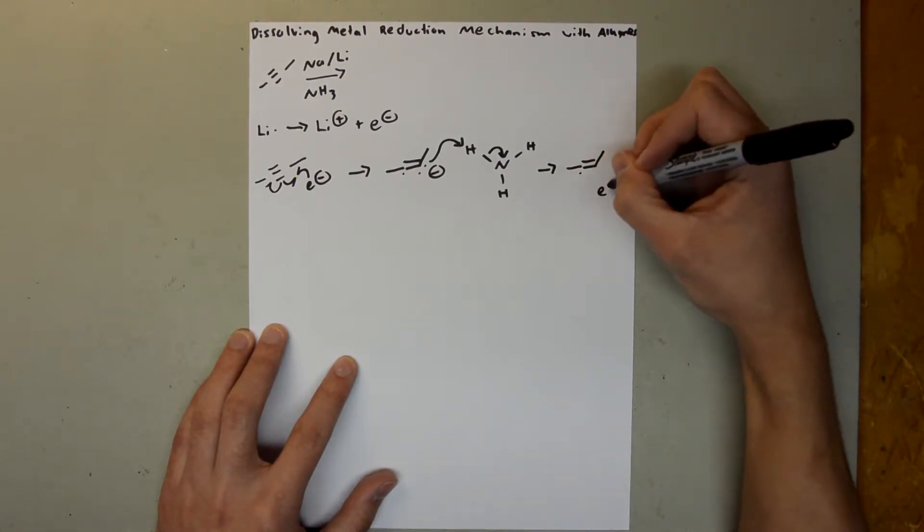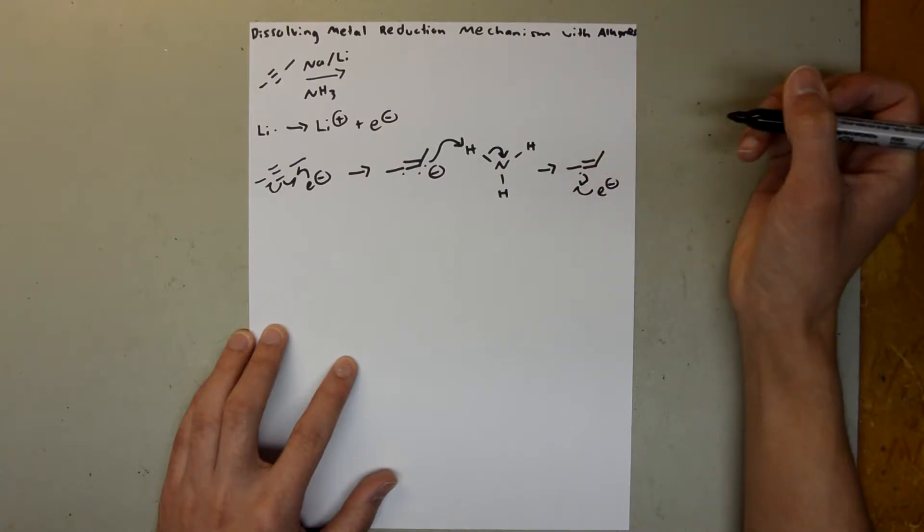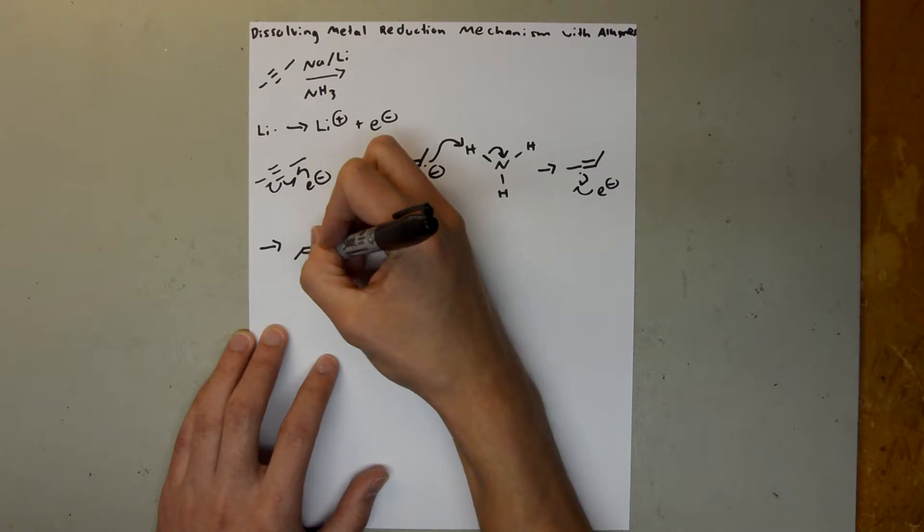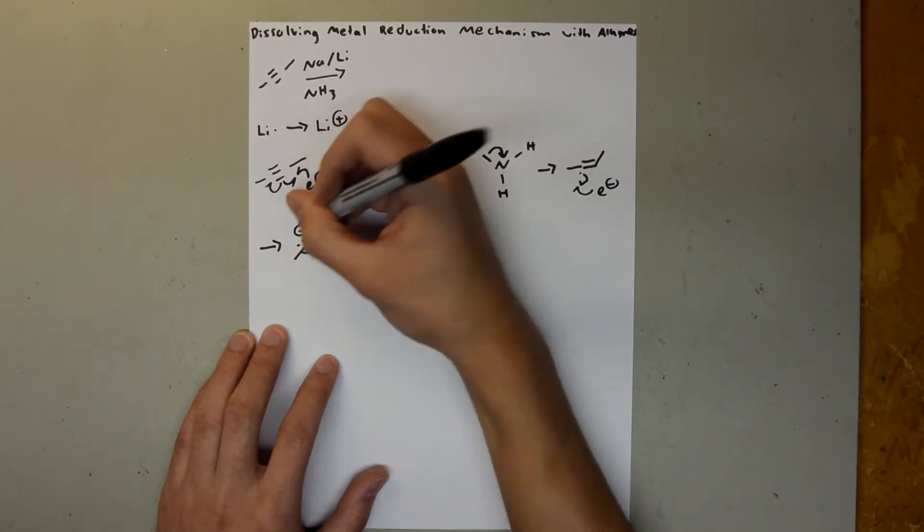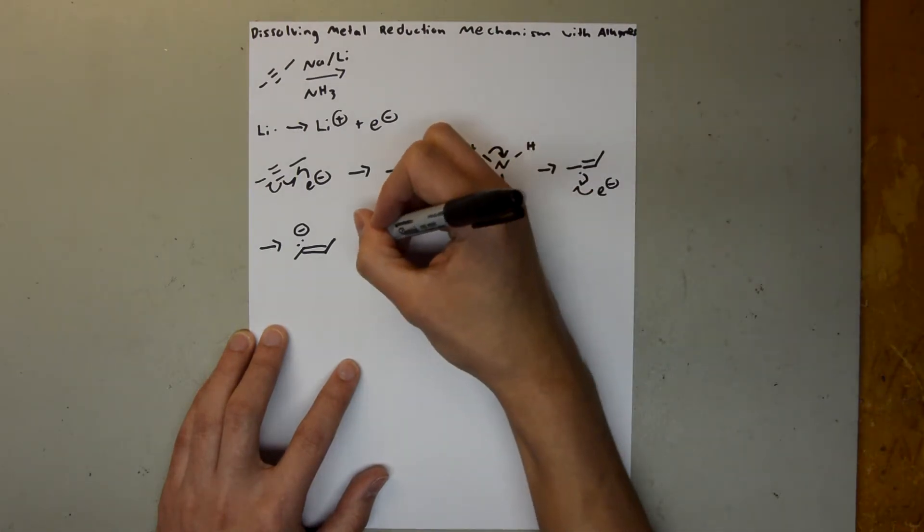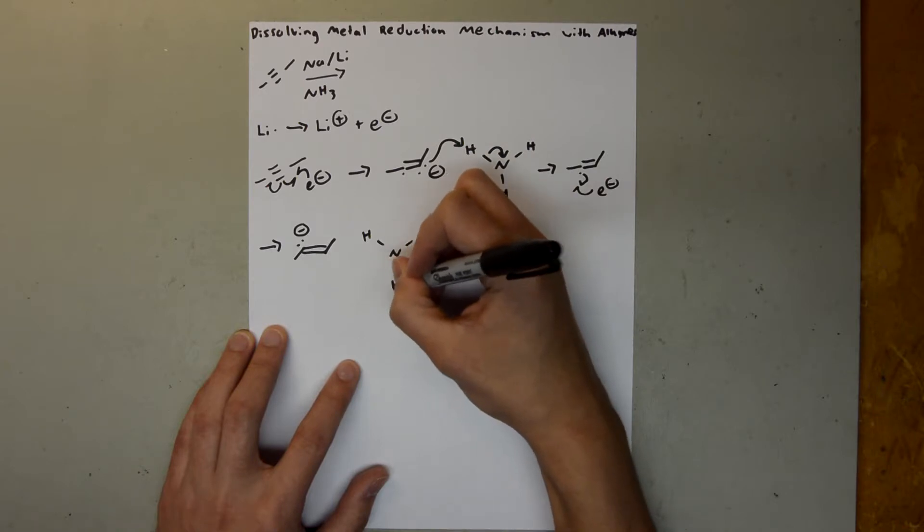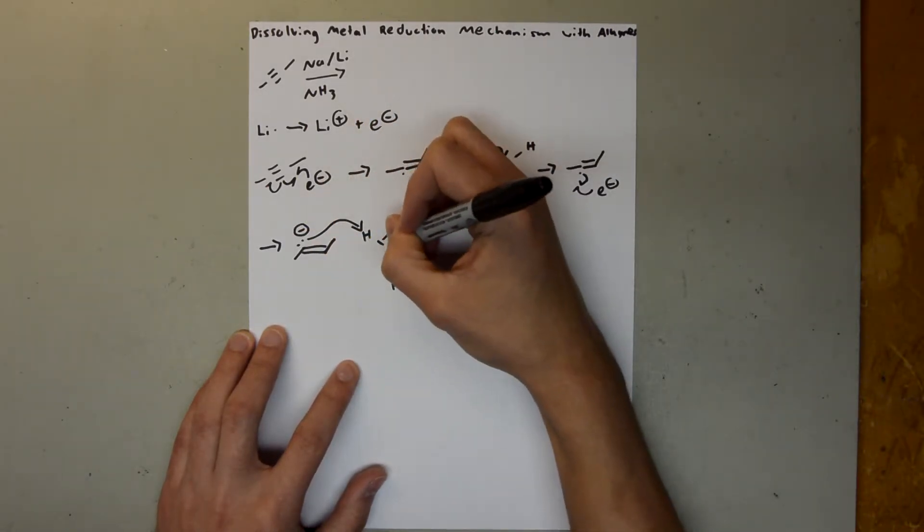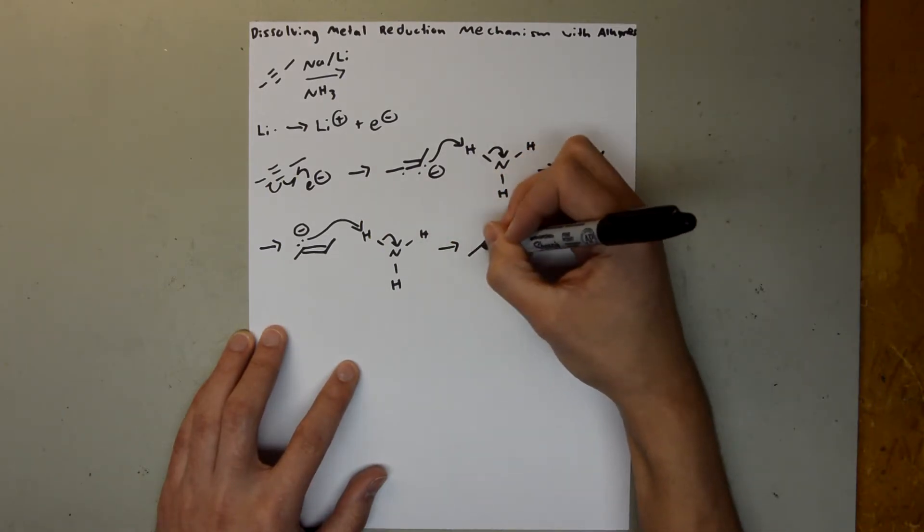And then we're going to have another electron bond with this, and that's going to form this compound with a negative formal charge on that lone pair. And then we're going to have another NH3, and this lone pair is again going to attack the H, bond goes to the nitrogen, and our final product is going to be this.